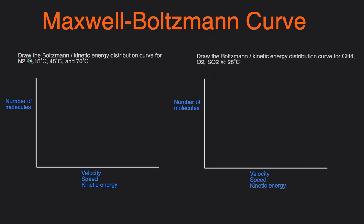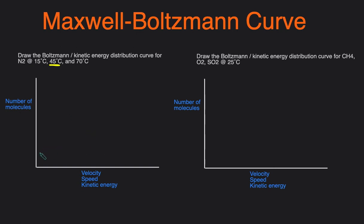Here we have to draw the Maxwell-Boltzmann, or kinetic energy distribution curve, for N2 at 15°C, 45°C, and 70°C. So we have the same compound, N2, but at different temperatures. I'm going to start with the middle temperature at 45°C and just draw a generic curve.